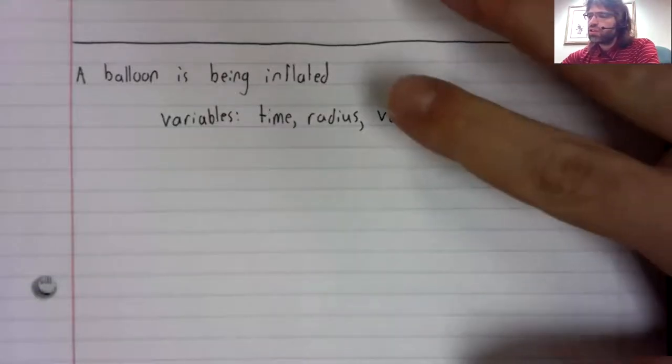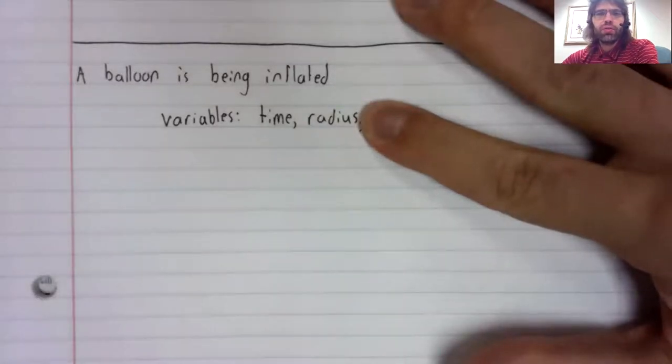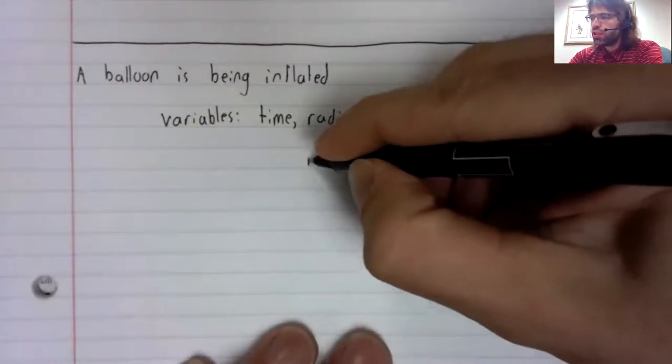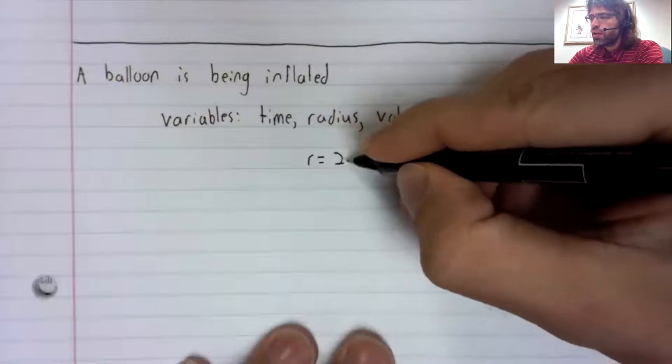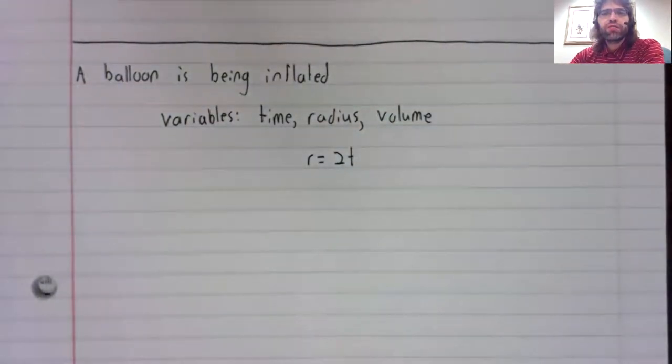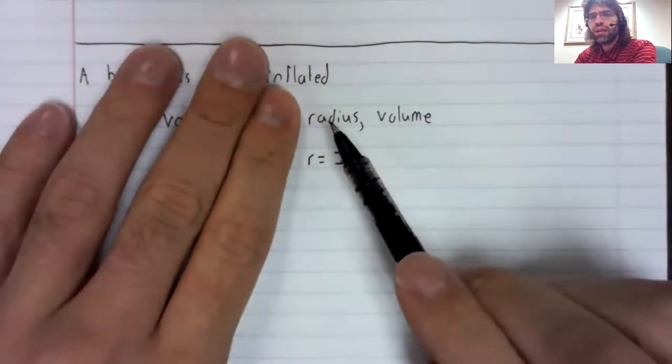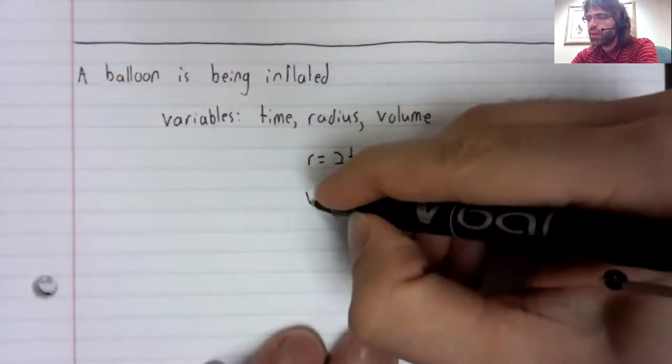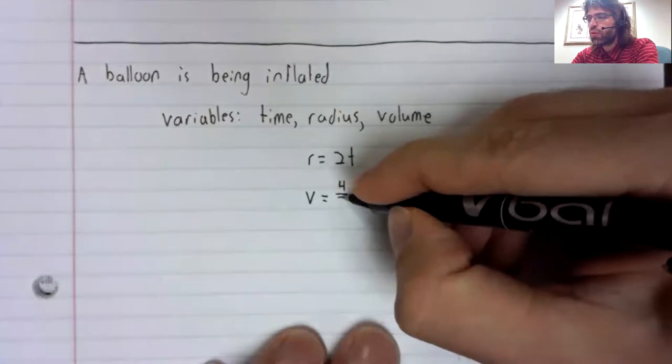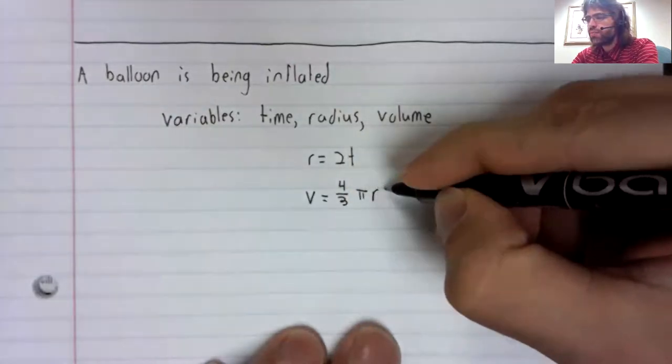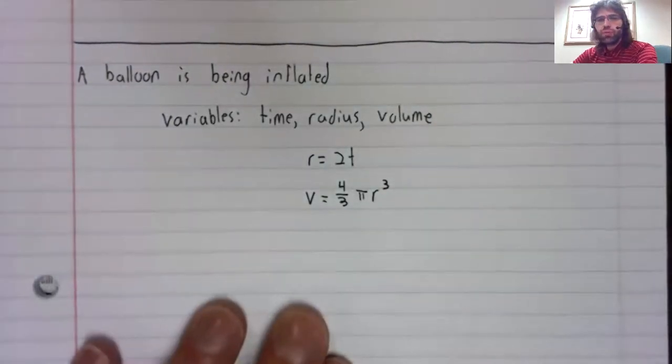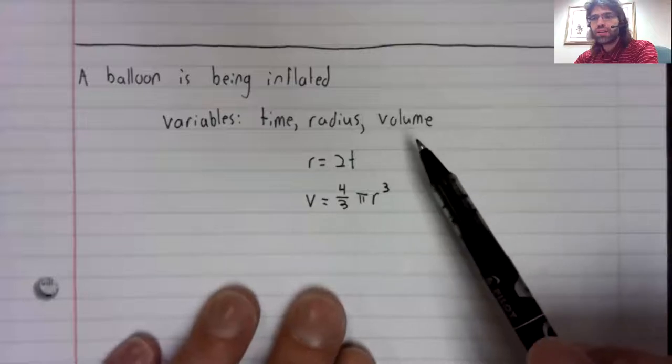Well, as time passes, the radius of the balloon increases, so the radius is a function of time. I don't know how physically realistic this is, but just for simplicity, say that radius is a linear function of time. Now the volume of the balloon depends on the radius: V equals four thirds pi r cubed.